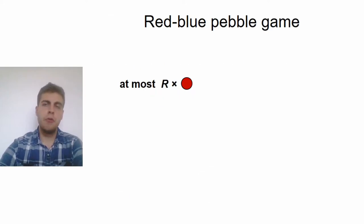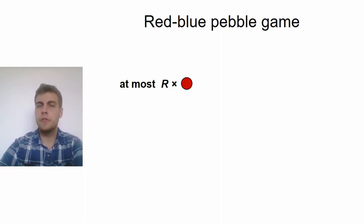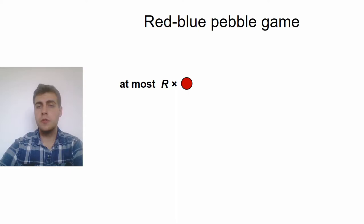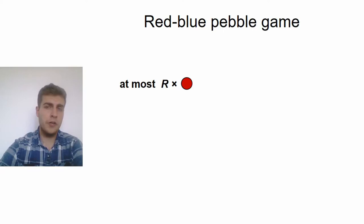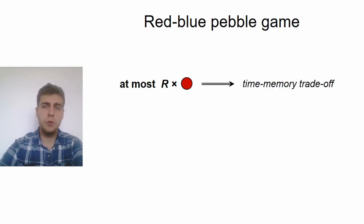Furthermore, in practice, we usually only have a limited amount of fast memory. So, to model this, we also introduce a further constraint that, at any point in time, there can be at most r red pebbles on the DAG, which allows us to model a time-memory trade-off.